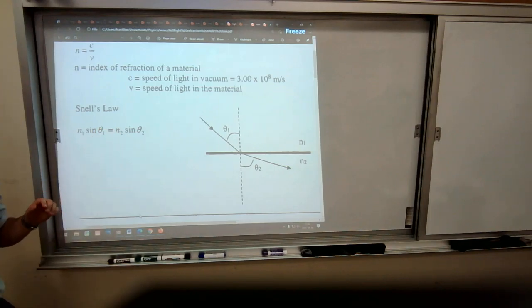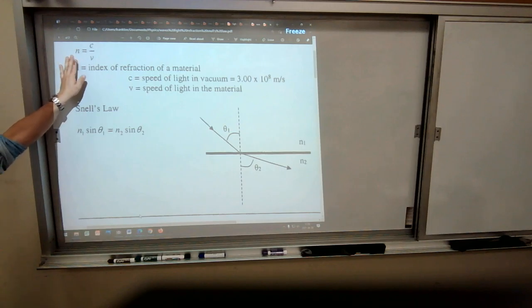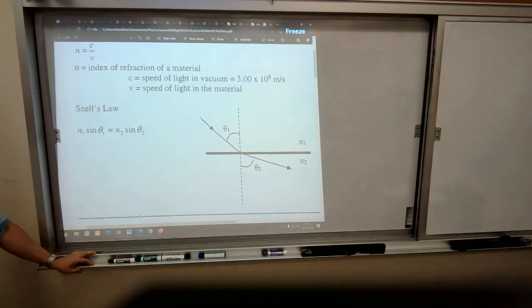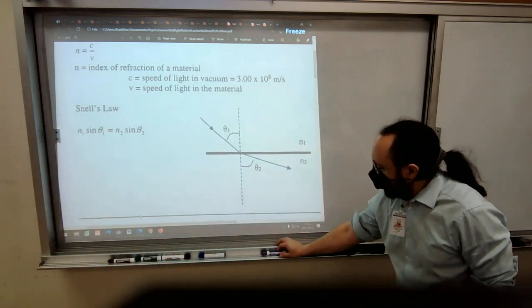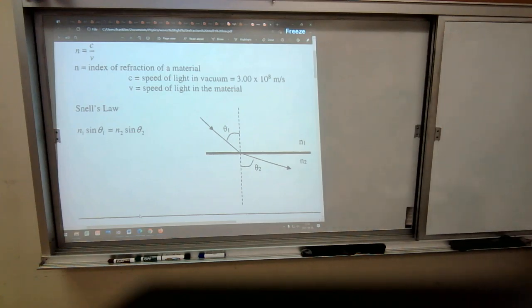So it'll be important when you're doing some of these questions. There are a bunch of them, or conceptual questions, that ask you to rank the index of refraction from greatest to least, and you have to know that the bigger that number is for n, the slower light goes in that material. If n is 3, that means light is 3 times as slow. If n is 5, that means light is 5 times as slow as in the vacuum.